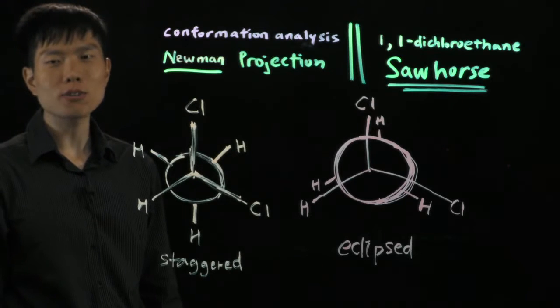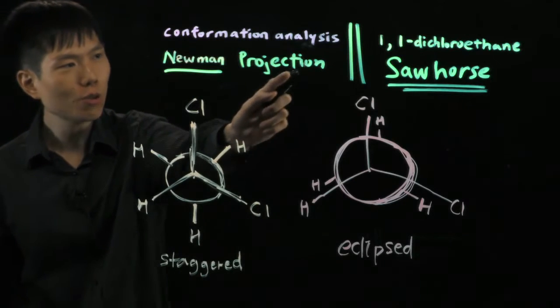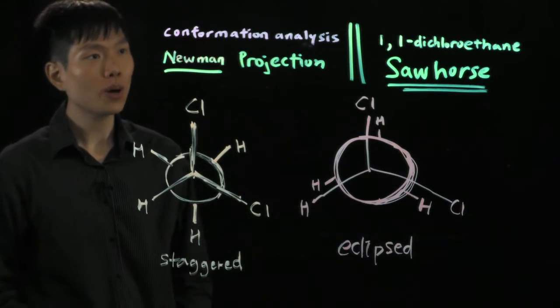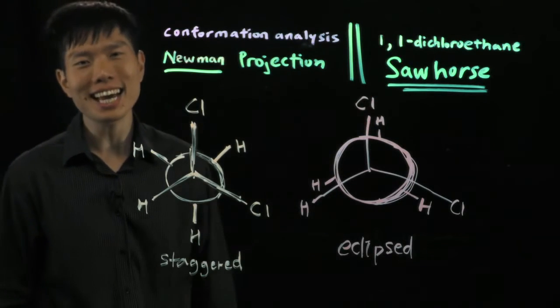Hey guys, so here I'll be teaching you how to convert the Newman projection to a Sawhorse projection. In this case, I'll be using this example of 1,1-dichloroethane.